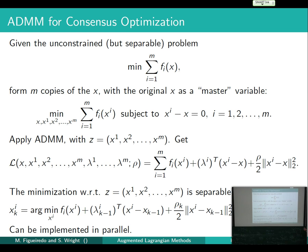The idea of inexact implementations of ADMM has only recently gotten convergence theories. It's obvious in practice you want to get away with inexact solutions to the subproblems. Rigorous convergence theory for inexact ADMM has only emerged in the last couple of years.